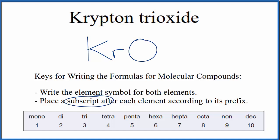Next, we'll place a subscript after each of these elements according to its prefix. So for krypton, when we look at this, there's nothing out here. We don't write mono for the first element. So there's only one krypton atom in this compound. We don't write the one though, we just assume that it's there.